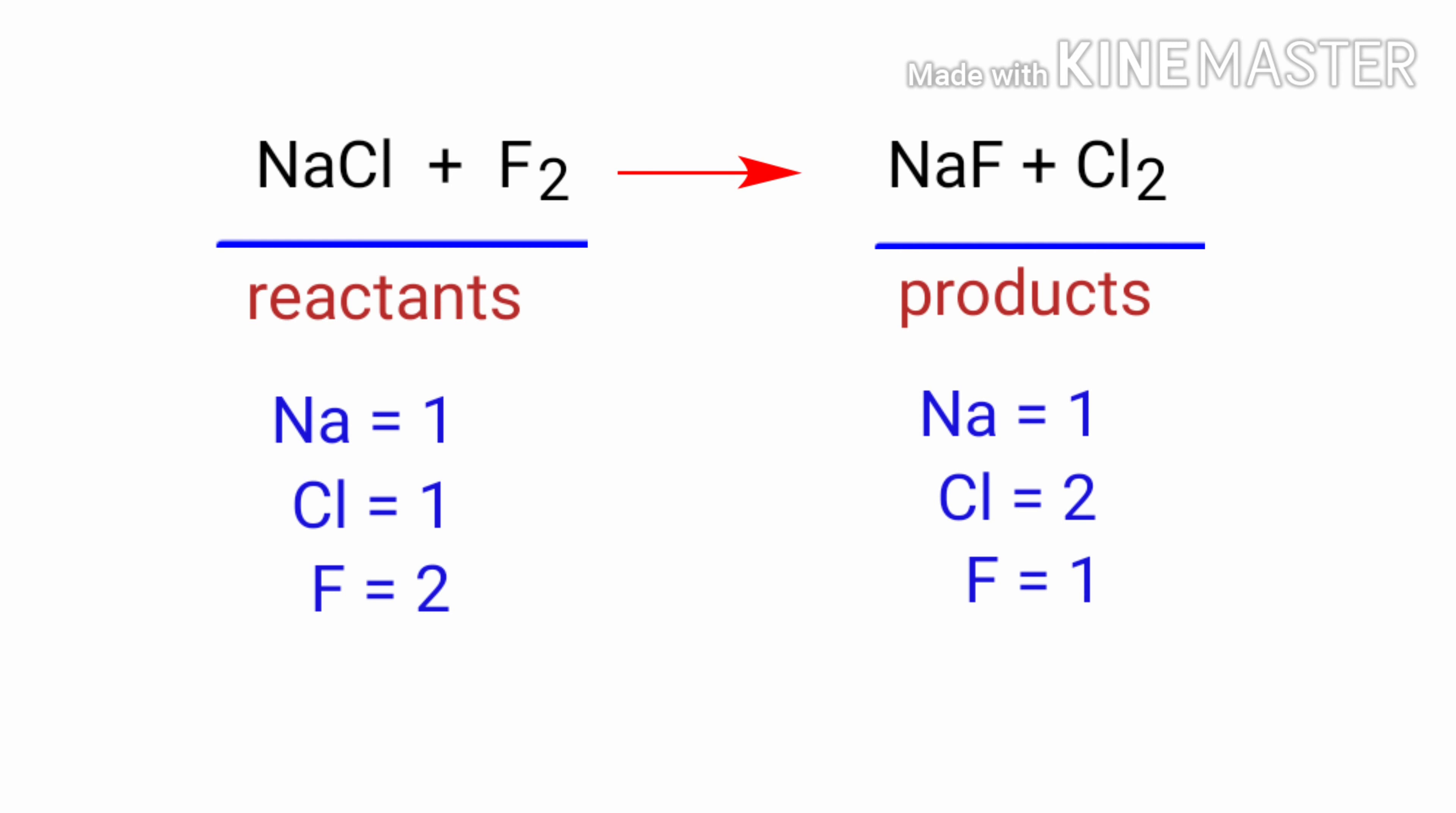If you look at this equation, the equation is not balanced. In the reactants side, there are one sodium atom, one chlorine atom, and two fluorine atoms present. On the products side, there are one sodium atom, two chlorine atoms, and one fluorine atom present. The number of atoms are not balanced on both sides.